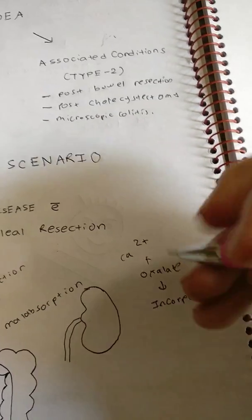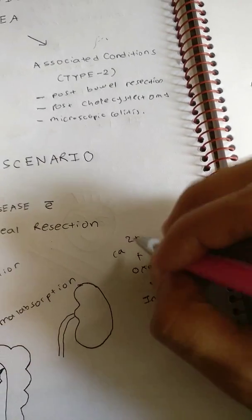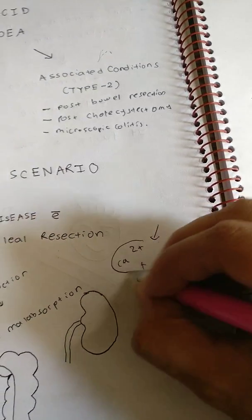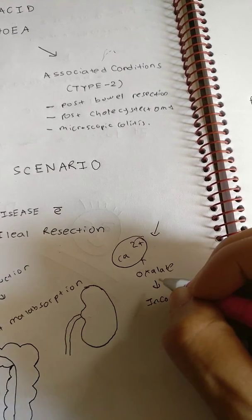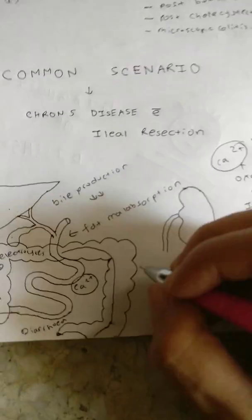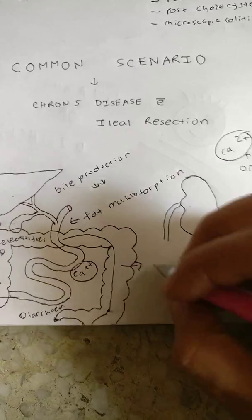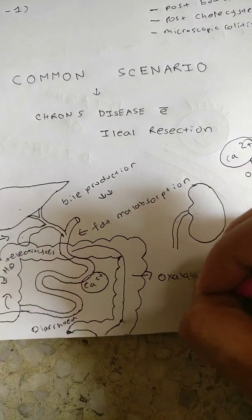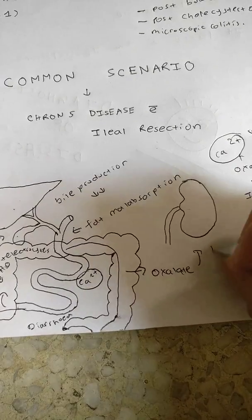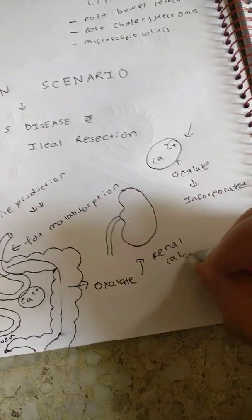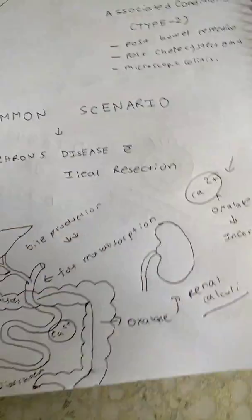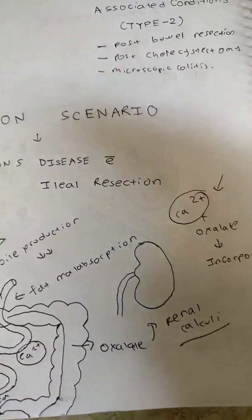The bile salt binds to this calcium and this oxalate is absorbed more from the colon. We know that oxalate produces renal calculi, so the chance of renal calculi also increases in this condition.